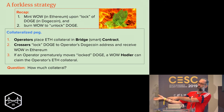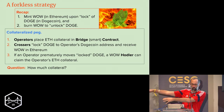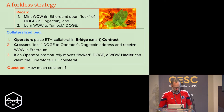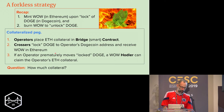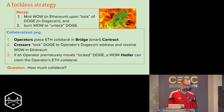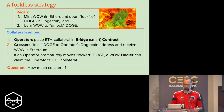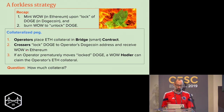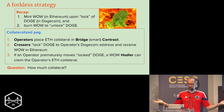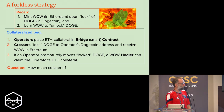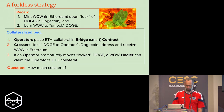What we do is have operators put up collateral — this is all done by economics instead of expanding the language of Dogecoin. The operator puts in collateral to create the bridge, so when a crosser comes along to lock Doge and get Wow in Ethereum, if the operator moves the locked Dogecoin out, the crosser can claim the operator's ETH collateral. The operator doesn't move it because if they do, they lose their collateral in Ethereum.